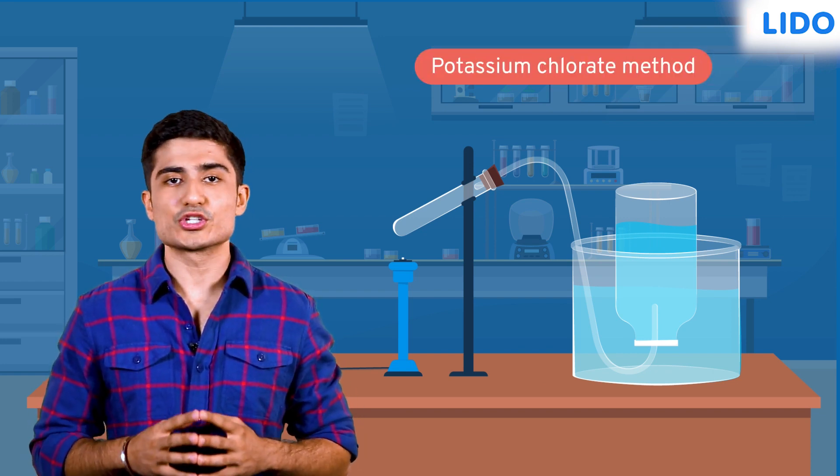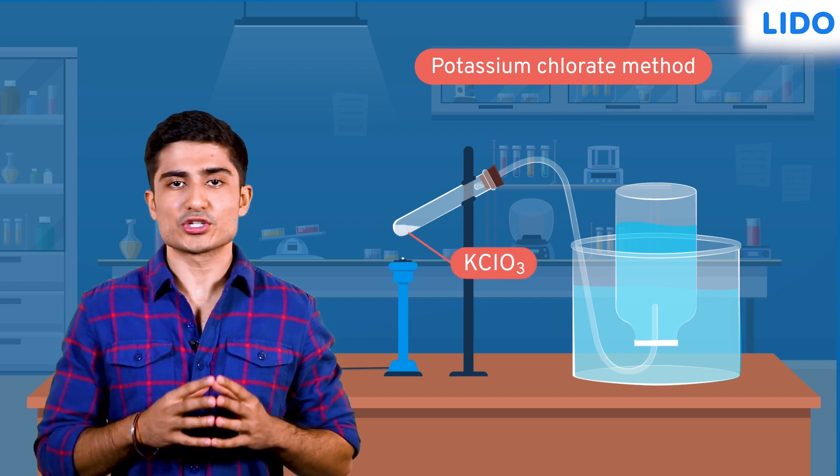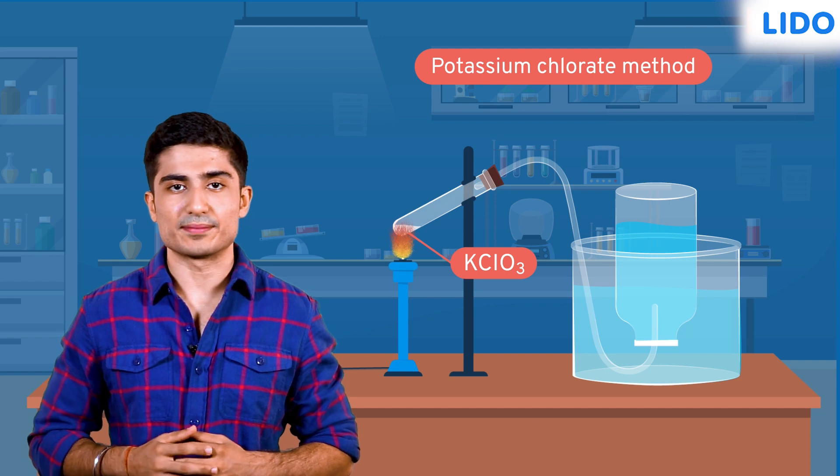The first method is the potassium chlorate method. We will first take some potassium chlorate in a test tube and then heat it at a very high temperature.